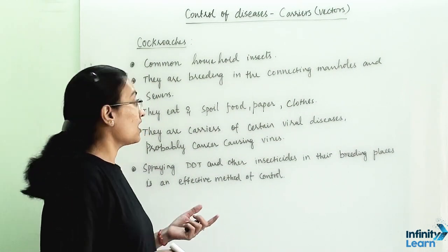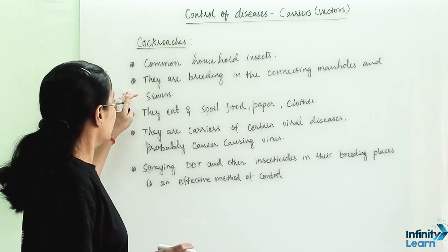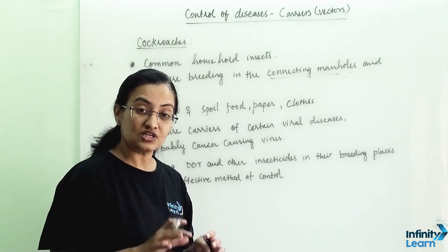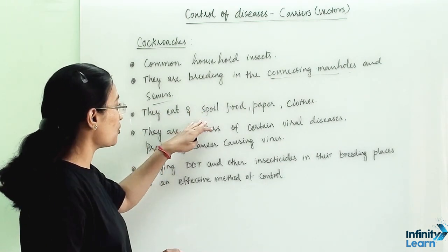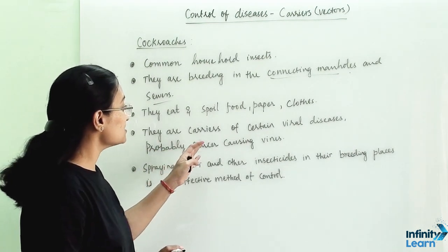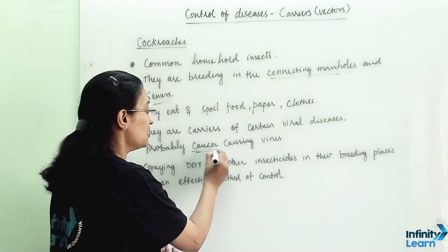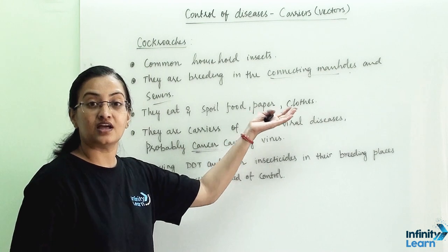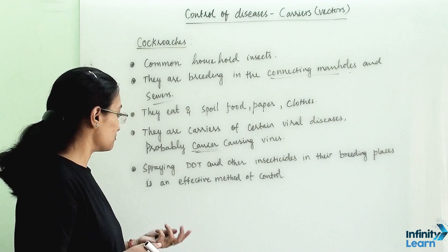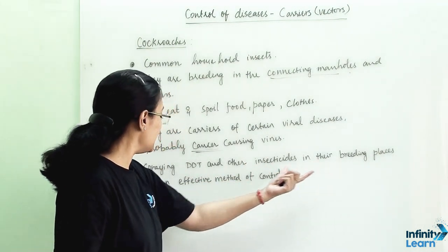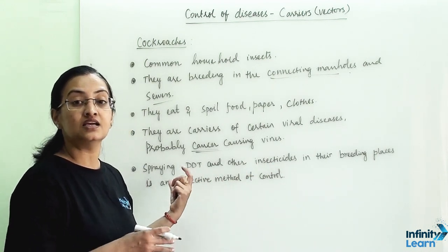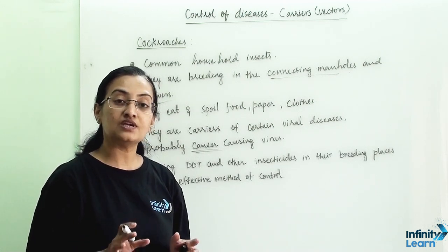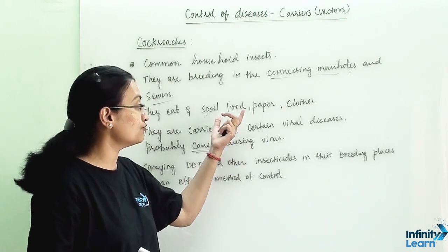Our next carrier and vector are cockroaches. They are common household insects that breed in connecting manholes and sewers — wet, damp, and dark places. They eat and spoil food, paper, and clothes, and are carriers of certain viral diseases, possibly including cancer-causing viruses. When they roam in our houses, they may contaminate food, paper, and clothes with these dangerous viruses. To control them, spraying DDT and other insecticides in their breeding places — like connecting manholes and sewers — is an effective method, eventually preventing them from infecting household items.